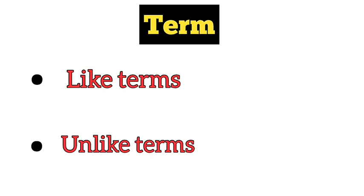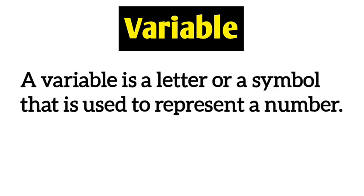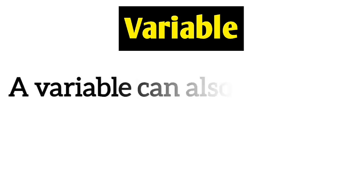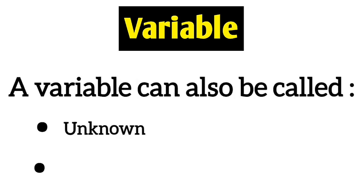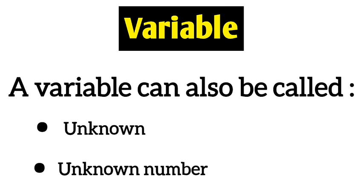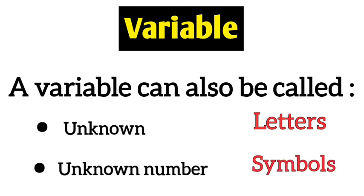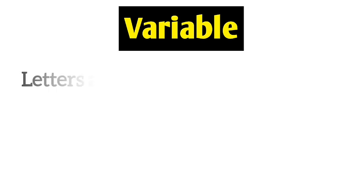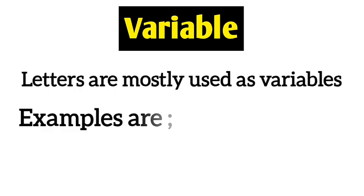I will explain like terms and unlike terms in a separate video. Now let's talk about the next terminology: variable. In algebraic expression, a variable is a letter or symbol used to represent a number. A variable can also be called an unknown or unknown number. Variables can be represented by letters from the alphabet or symbols. In algebraic expression, we mostly use letters as variables.